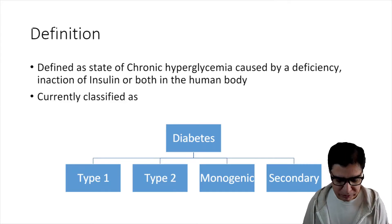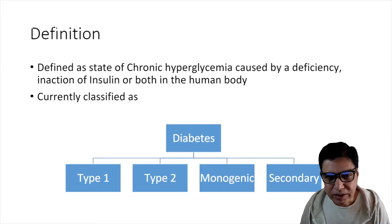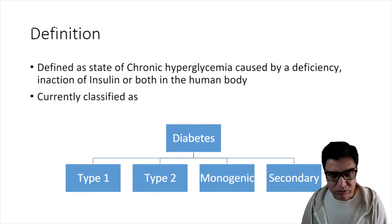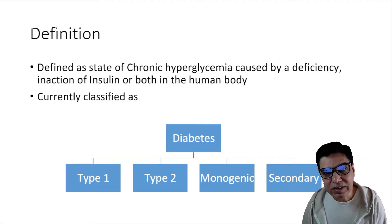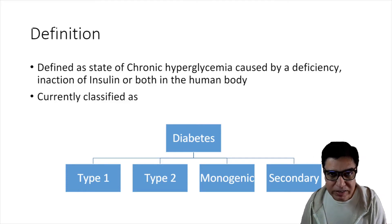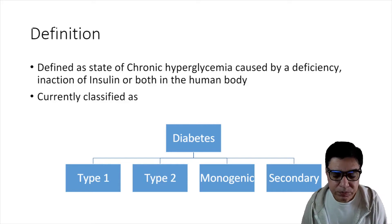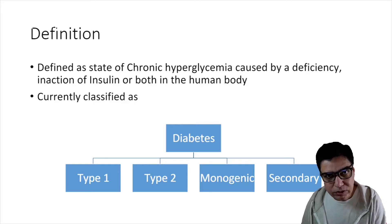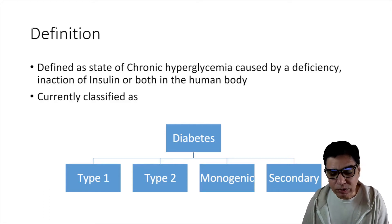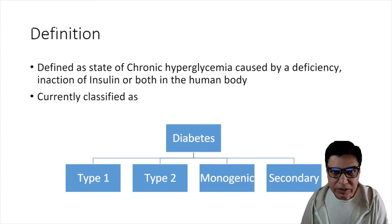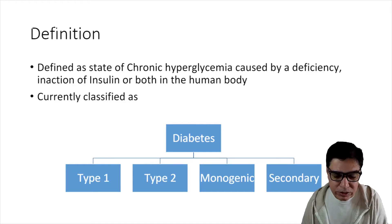Let's start with the definition. Diabetes is defined as a state of chronic hyperglycemia — chronic meaning it's been there for some time, and hyperglycemia meaning increased levels of glucose in the blood. That is caused by either deficiency of insulin, or inaction of insulin, or a combination of both.